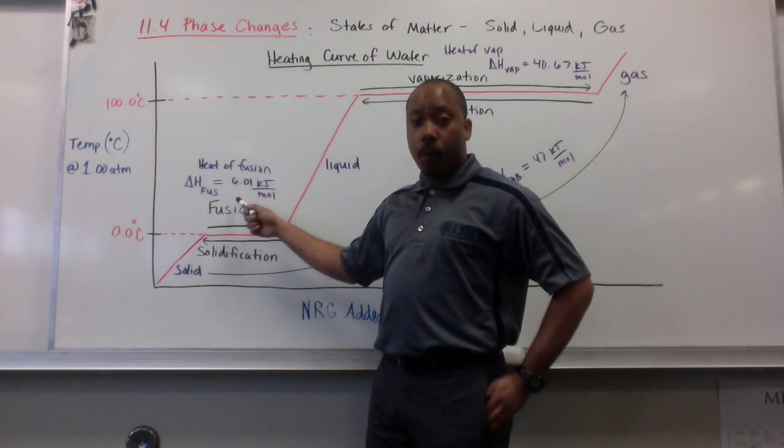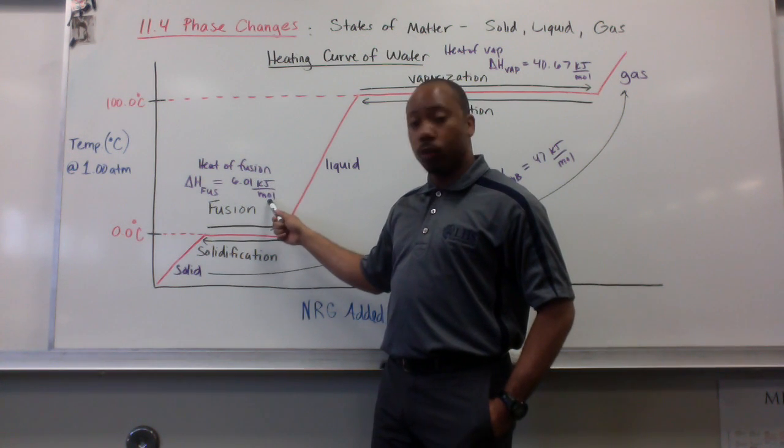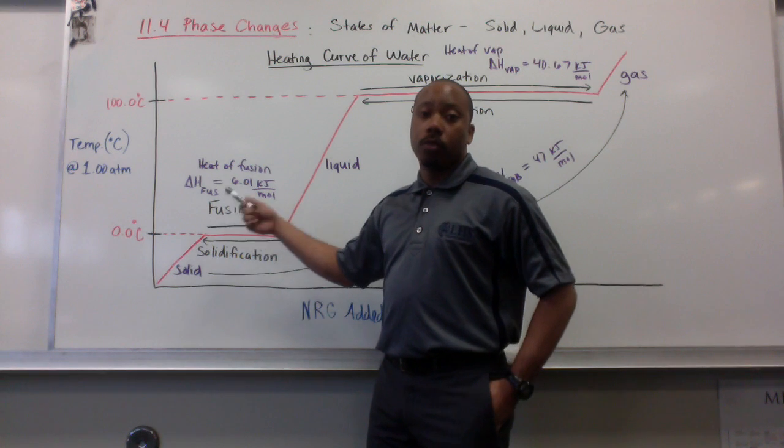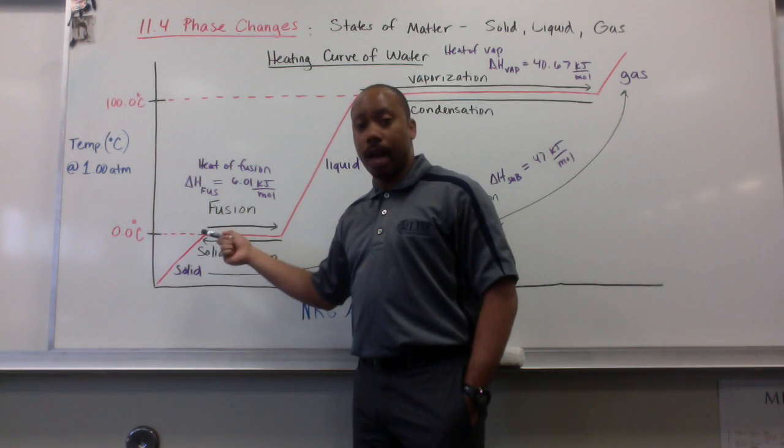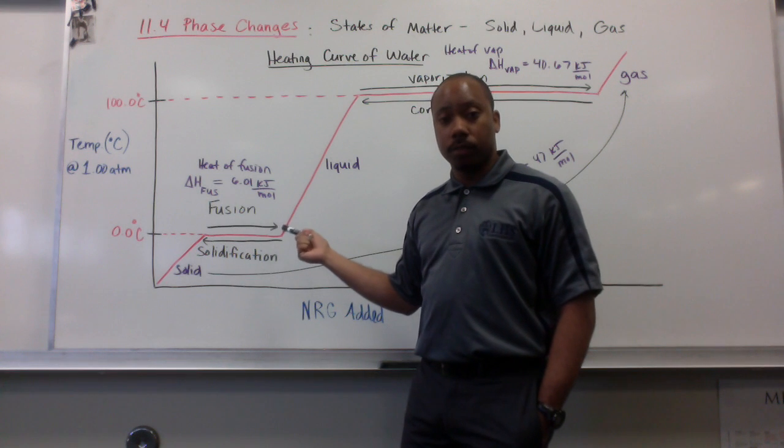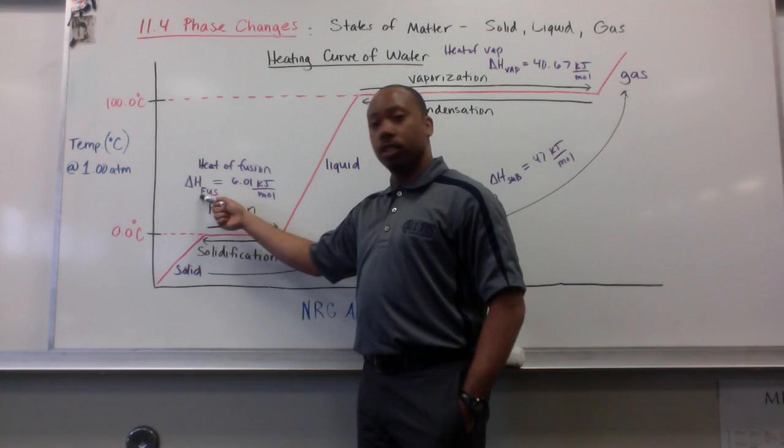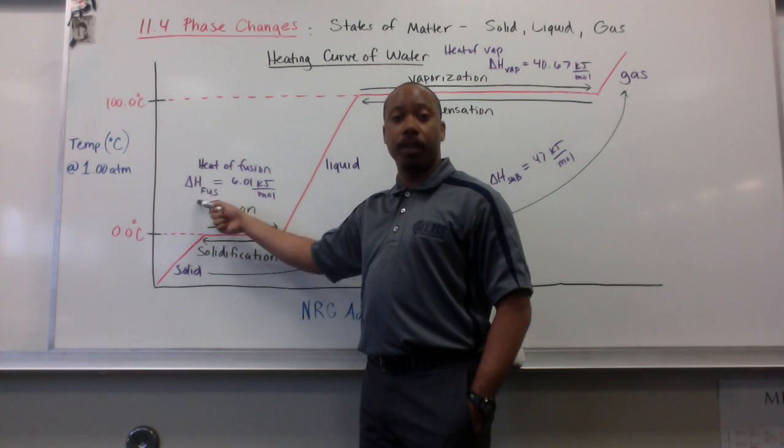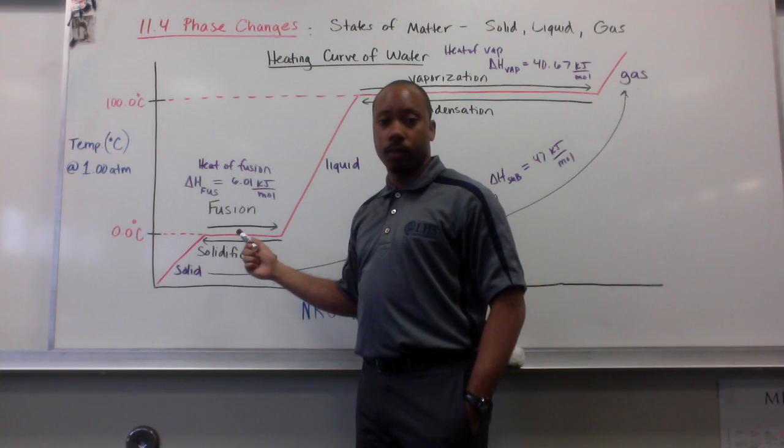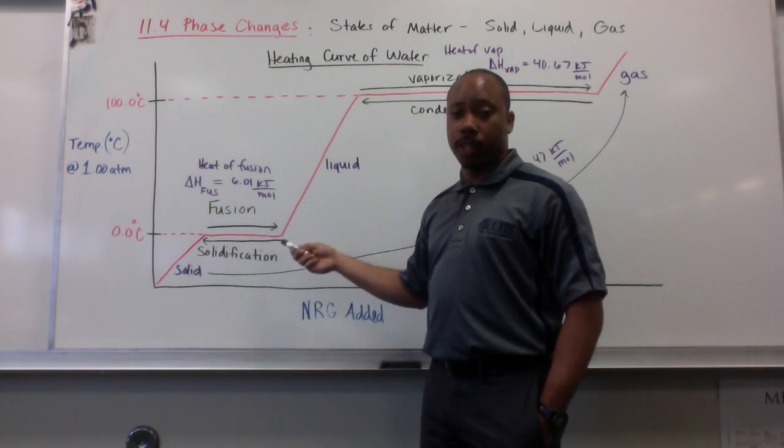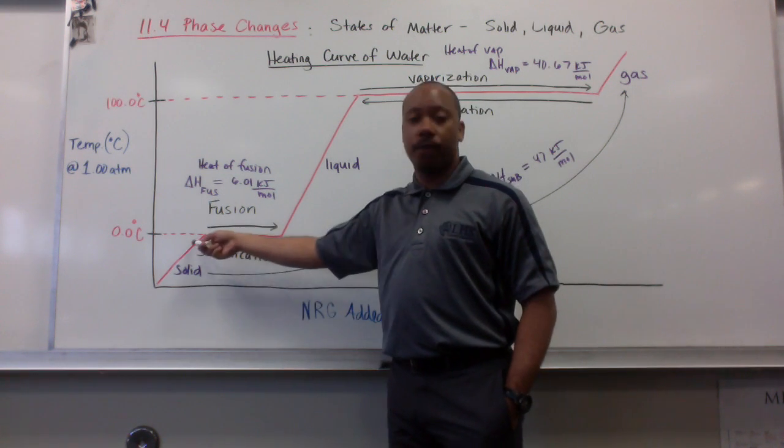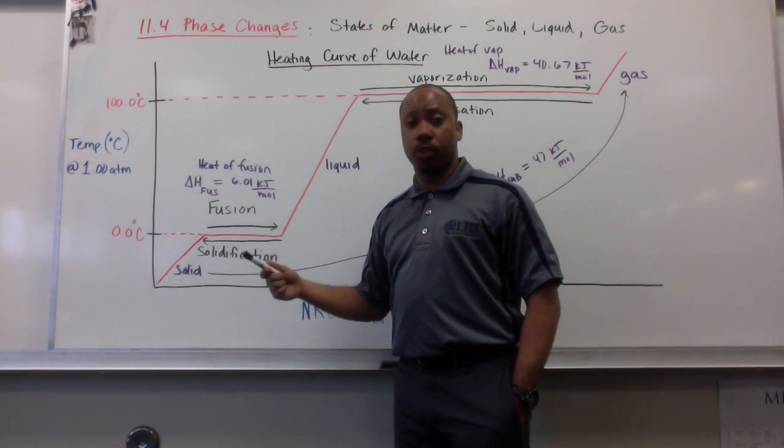So, it requires 6.01 kilojoules per mole in order for, well, 6.01 kilojoules in order for one mole of ice to melt. We call that delta H sub FUS, the enthalpy of fusion or the heat of fusion. It will just be the opposite number. You have to lose 6.01 kilojoules for every mole to solidify. So, it will be negative 6.01 kilojoules per mole.